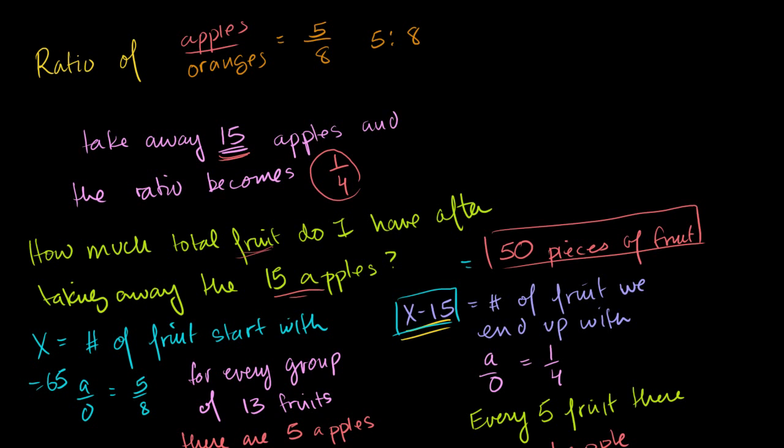So let A is equal to the number of apples we are starting with. And let O equal the number of oranges. That doesn't change throughout the whole problem. Number of oranges.